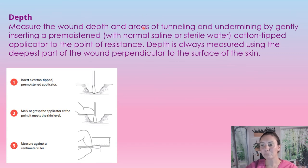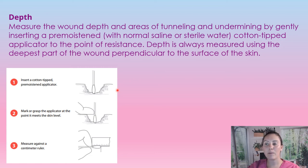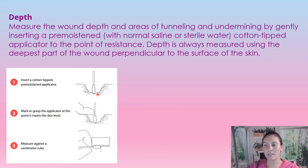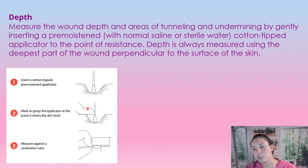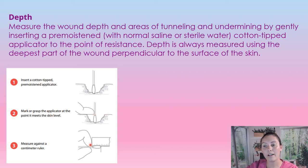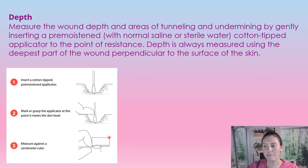To measure the depth, you insert a pre-moistened cotton tip applicator — moistened with normal saline or sterile water — just to the point of resistance, into the deepest part of the wound. Hold it perpendicular to the surface, then place your fingernail right across that spot. When you take it out, put it against your measuring tool, and that's how you find the exact measurement for the depth of the wound.